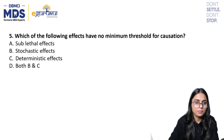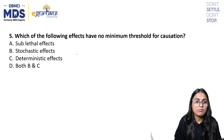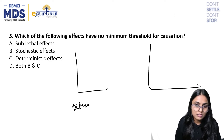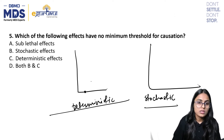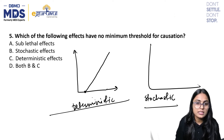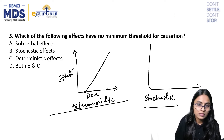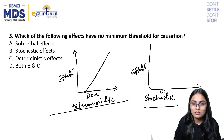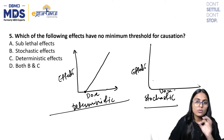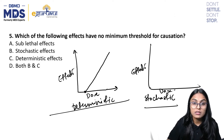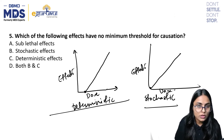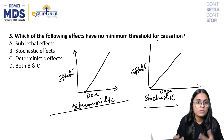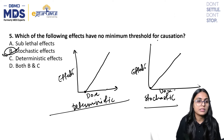Question five: which of the following effects have no minimum threshold for causation? We have studied radiation biology with two effects: deterministic and stochastic. Deterministic effects have a threshold dose above which effects are seen. In stochastic effects, there is no threshold dose — any dose can bring about stochastic changes. So the answer is stochastic effect.